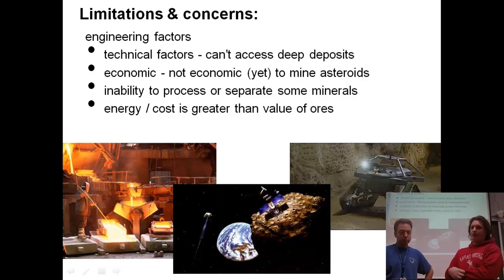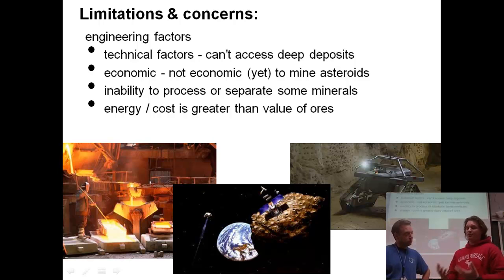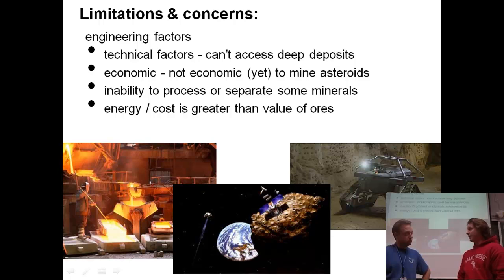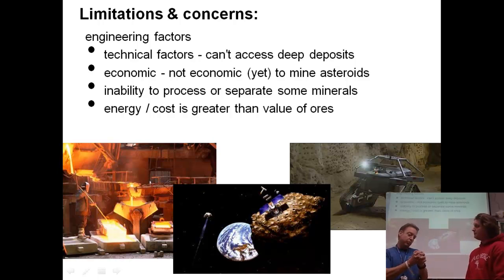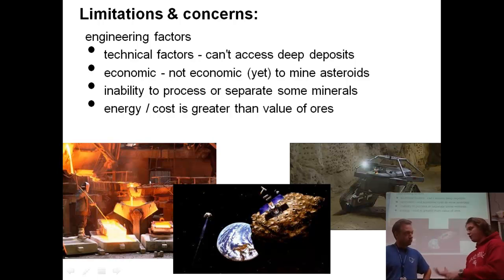Another limitation is the inability to process or separate some minerals. Going back to the ore question — some ores are mixed in with other rock and we have to separate them, which produces gangue and tailings. But sometimes it just costs too much money to separate them, more than the mineral or ore is actually worth. So it's not economically feasible. Like oils in shale — they almost have to spend too much energy to get the oil out of the shale, making it an energy-negative process.